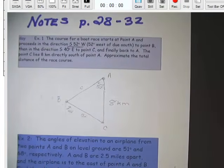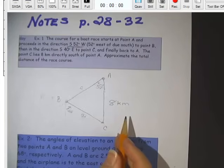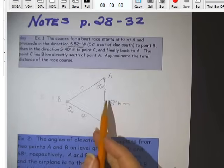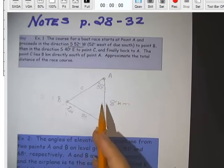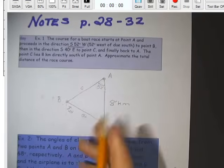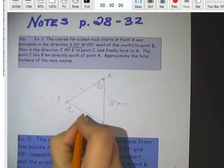So little c, the side, is across from big C, the angle, and little A to the side is across from big A, the angle. So how do we know whether or not we can use law of sines? Well, that depends on if we have an angle and its opposite side, which we don't seem to have yet.